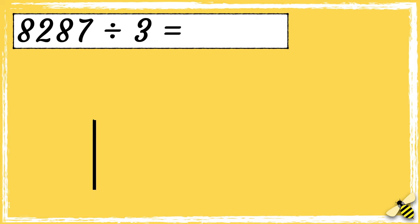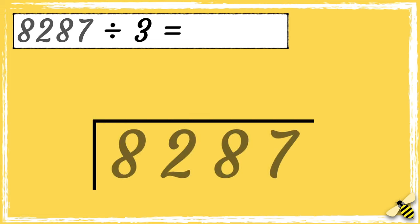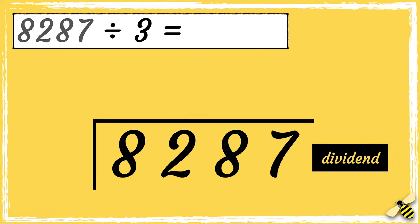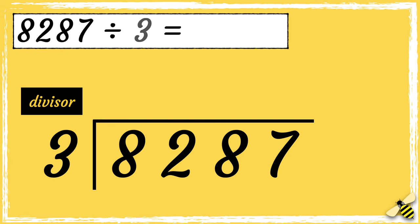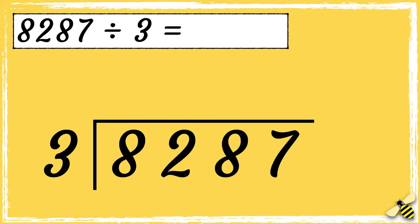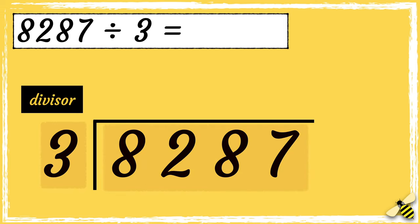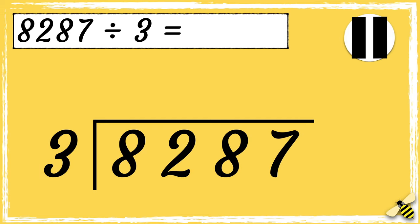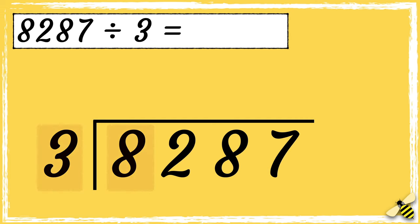Let's have a look at one more example: 8287 divided by 3. First we need to draw our bus stop. We put the dividend inside the bus stop and the divisor next to it. If you have a pen and paper to hand, pause the video and have a go at working out the answer, then write your answer in the comment section below.